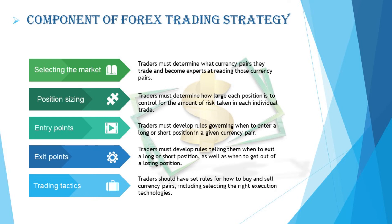First, select market: the trader must determine what currency pair to trade and become expert at reading those pairs. Position sizing: the trader must determine how large each position is to control the amount of risk in each individual trade. Entry points: the trader must develop rules governing when to enter long or short positions. Exit points: the trader must develop rules telling them when to exit a position and when to get out of a losing position. Trading tactics: traders should have set rules for how to buy and sell currency pairs, including selecting the right execution technologies.